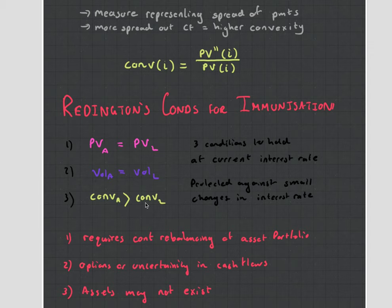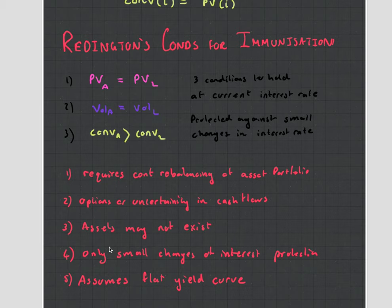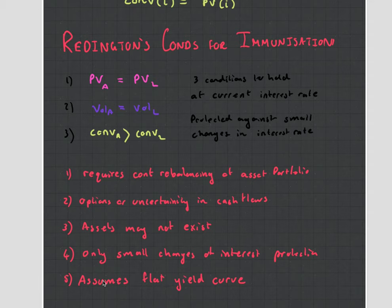This isn't perfect. Straight away, we can see there are five big problems with Reddington's theory: it requires constant rebalancing of your asset portfolio, which is expensive; sometimes cash flows are uncertain, making the maths difficult; the assets needed may not even exist; it only gives protection against a small change in interest rates; and it assumes the yield curve is flat, which we saw in the previous video is not the case. So this isn't a perfect system, but it is very elegant.